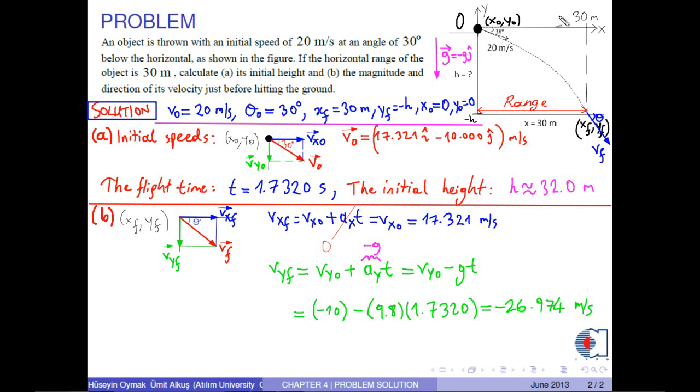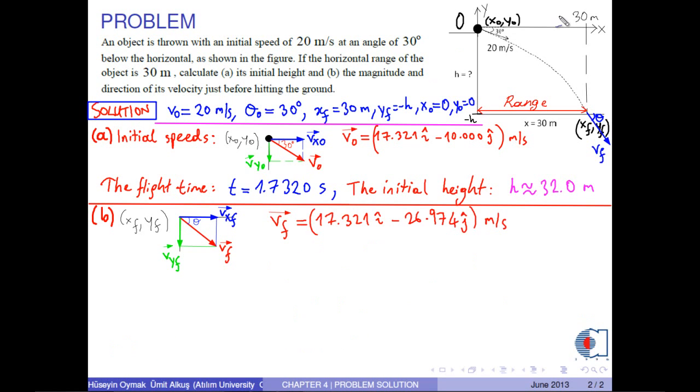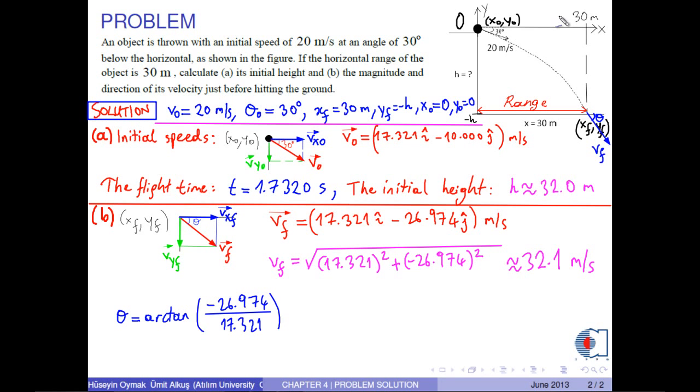As a result, in unit vector notation, the final velocity vector becomes... Now, we can find its magnitude by this formula. So, we get approximately 32.1 meters per second. And angle theta is calculated by this formula. Therefore, we obtain approximately negative 57.3 degrees.